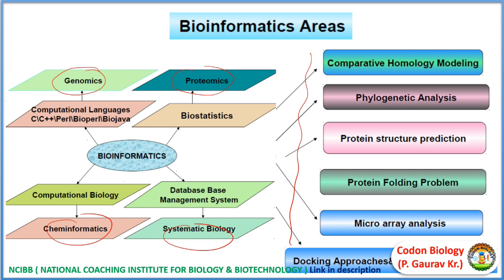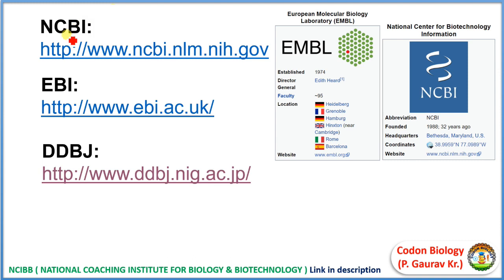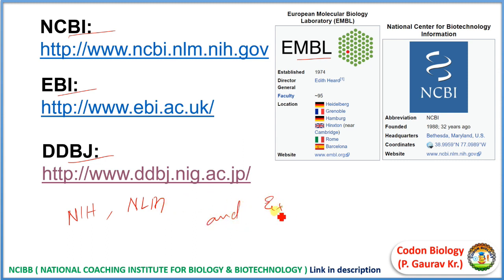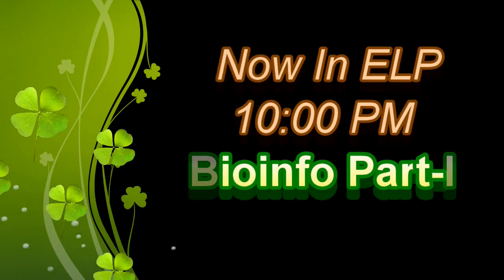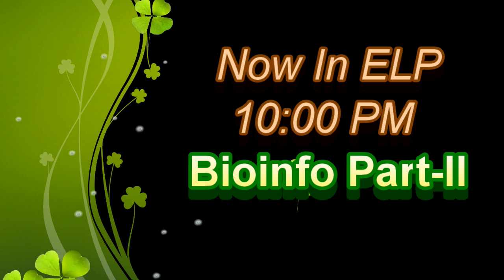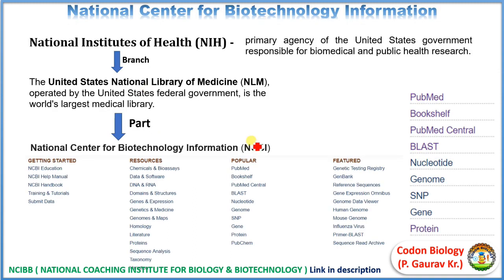If you are starting to learn bioinformatics, you must know some basic things like NCBI, EBI, DDBJ, EMBL, NIH, NLM, and ExPASy. Let's start with NCBI. NCBI is part of NLM — NLM means United States National Library of Medicine — which is the branch of NIH, meaning National Institute of Health.